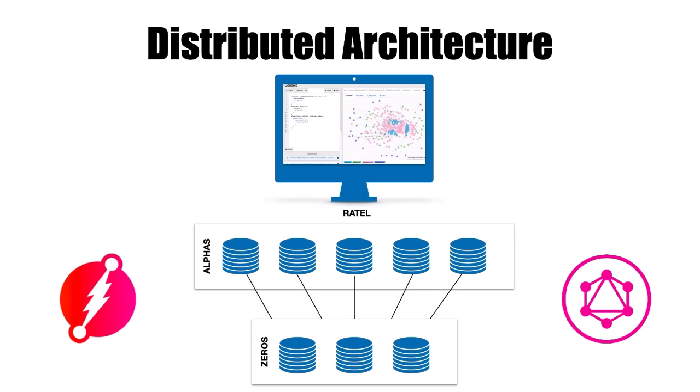Let's talk about the architecture. DGraph is composed of three different systems. At the top we have the Ratel UI, which is a web user interface that you run in your browser. We have the alpha servers, which are responsible for storing the data. Most of your interaction with DGraph would be over the alpha servers — whether you're hitting the servers directly for queries, mutations, or through the web user interface, all of those queries come in through the alphas.